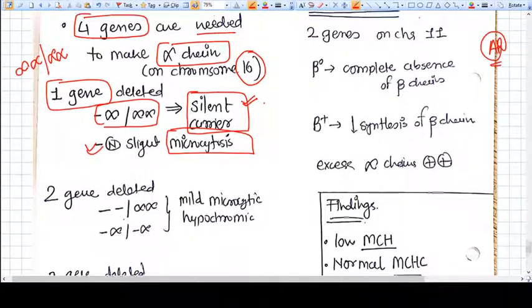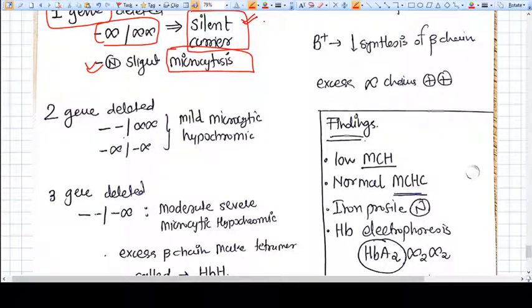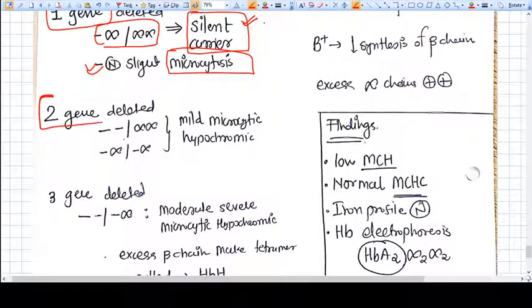Now if two genes get deleted, the symptoms will be more than in one gene deletion. With two genes deleted, they have mild microcytic hypochromic anemia because the synthesis of alpha chain is further decreasing.